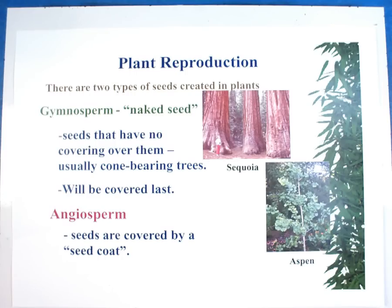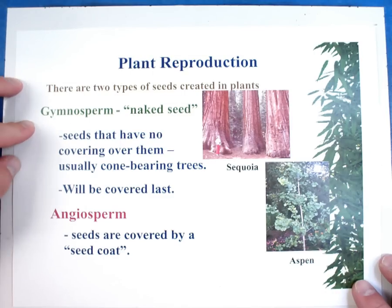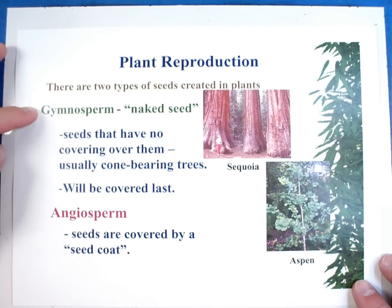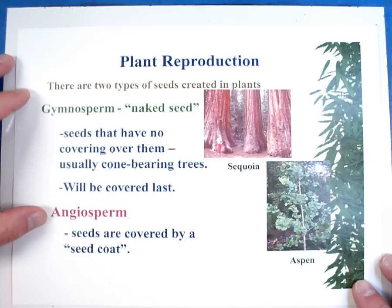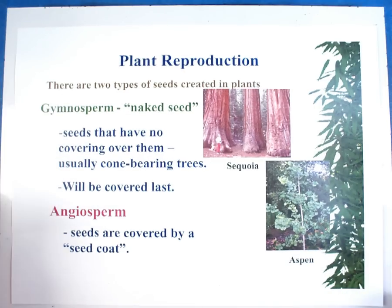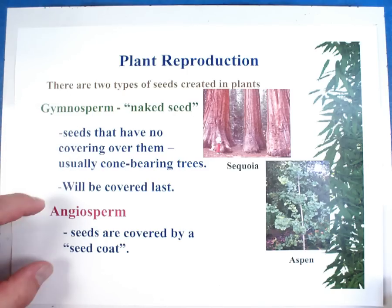In this video, we're going to talk about how plants reproduce. There are two types of seeds created in plants, and they're called gymnosperms and angiosperms. I want you to jot down the definitions and I'll come back in just a minute and explain them.